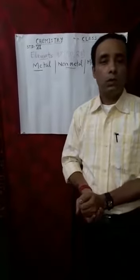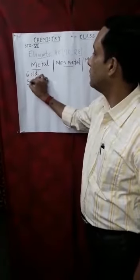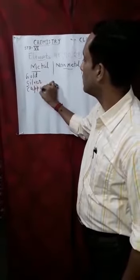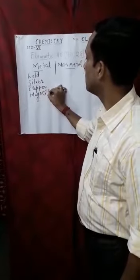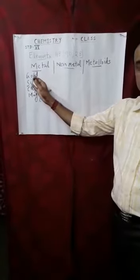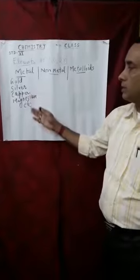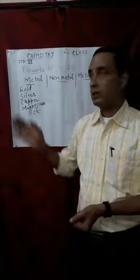We should know about some of the examples of metals. Gold, Silver, Copper, Magnesium, and so on. There are so many elements — metals — other than these few examples.